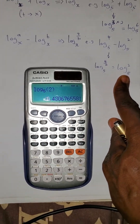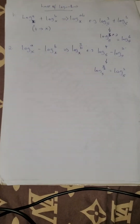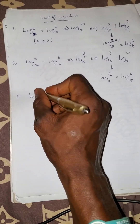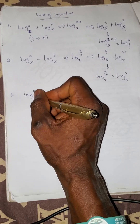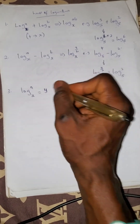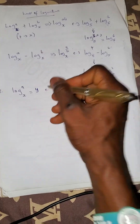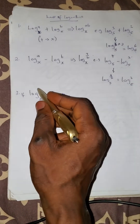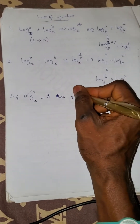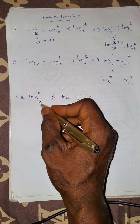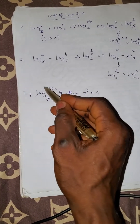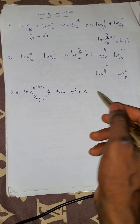The third law — I like this one very well because you need it to solve logarithm problems. If log a base x equals y, and you want to eradicate the log, it becomes x raised to the power y equals a. That is: the base raised to the power of the result equals the argument.